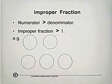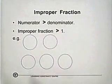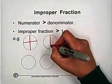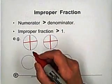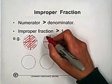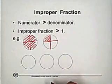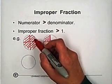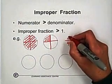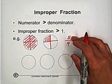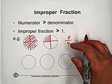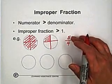This is an improper fraction. An improper fraction is when the numerator is greater than the denominator. For example, we cut a pie into four parts. We choose the first pie — all of them — and from the second pie we choose one. So the total equal parts are four, but you choose five parts: one, two, three, four, five. You choose five parts, so the numerator is greater than the denominator. The improper fraction is always greater than one.